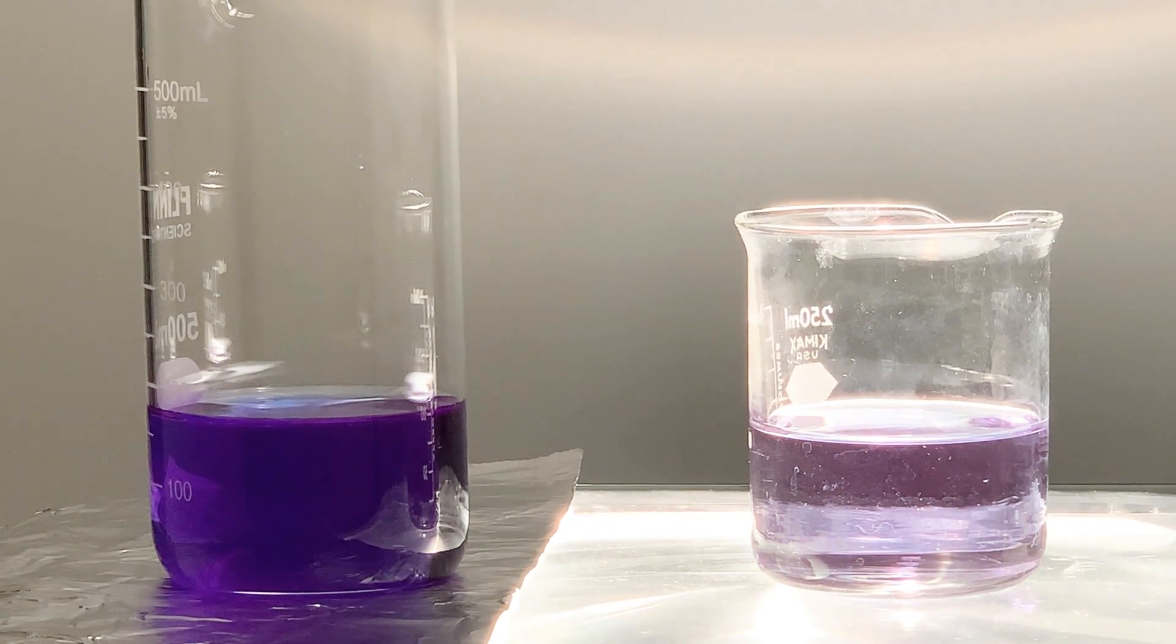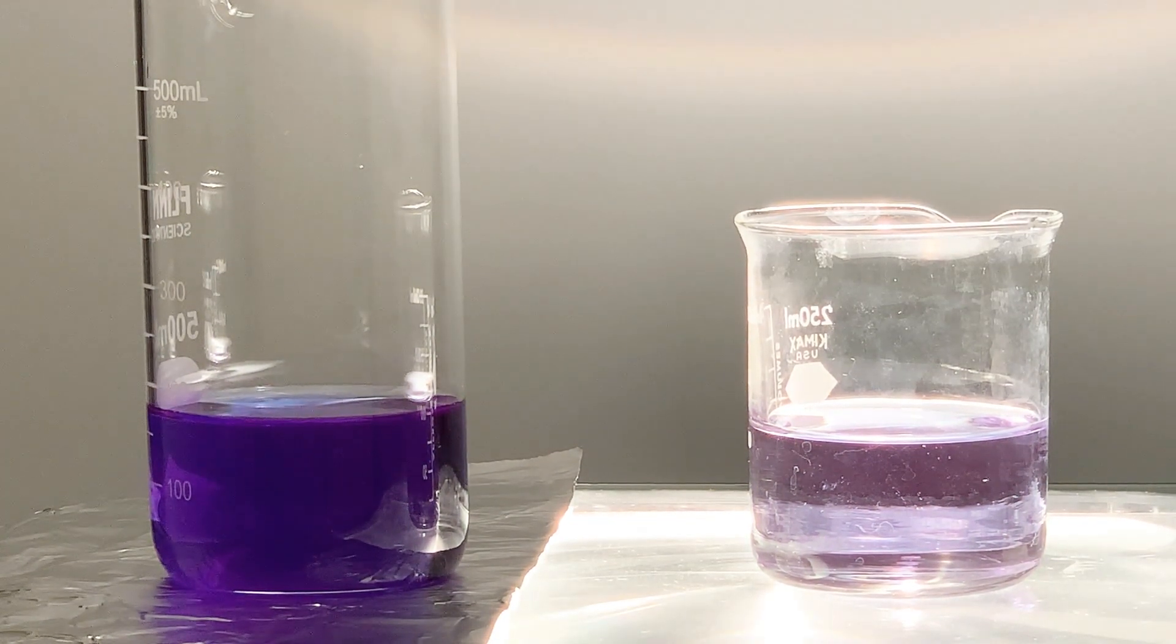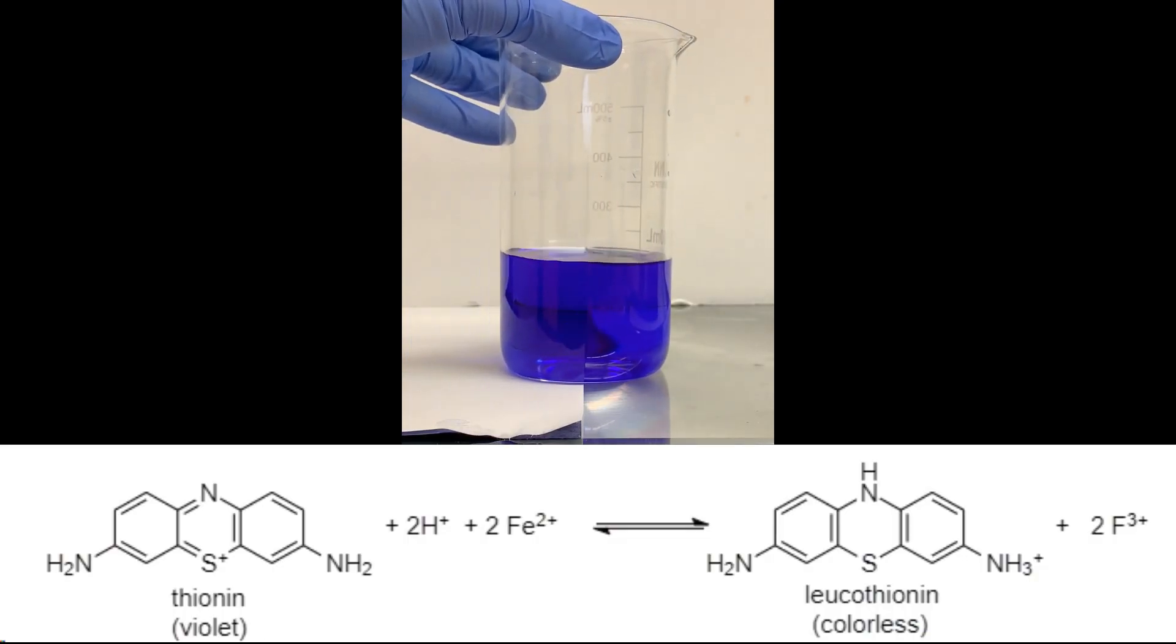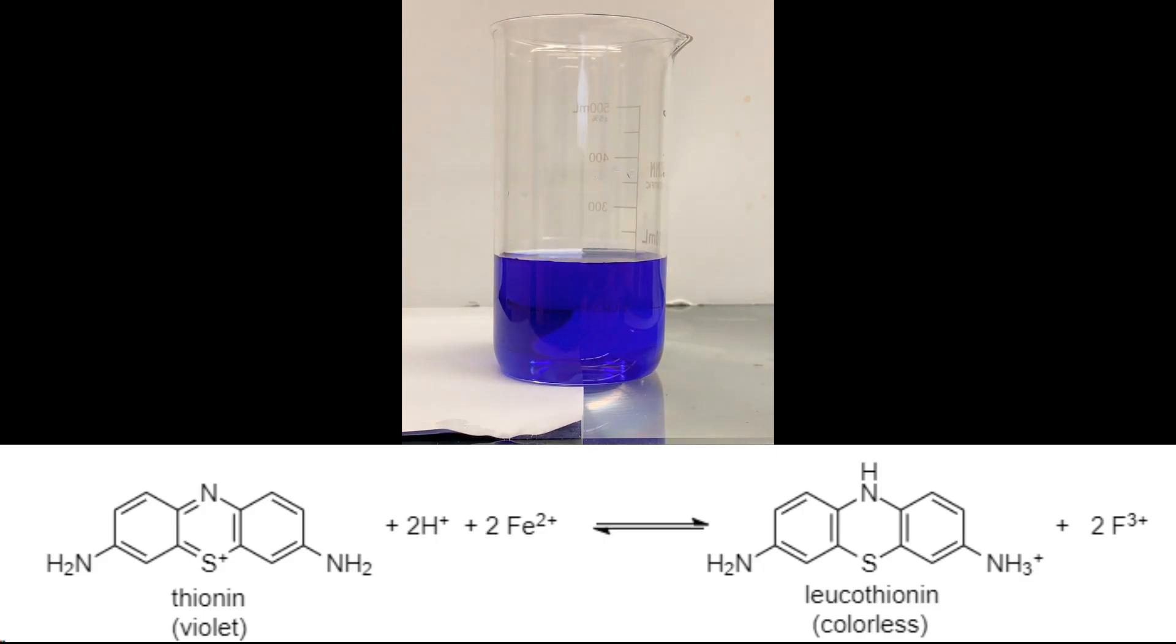The thionine fades when the light's turned on and returns when the light's turned off. These color changes occur because of the chemical reaction between thionine dye and iron ions.